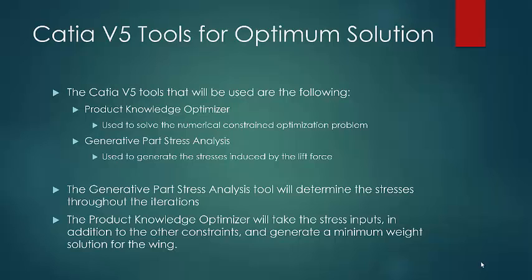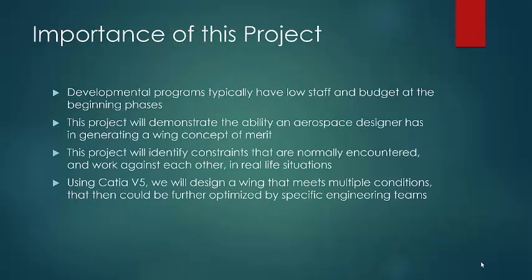The Product Knowledge Optimizer will take those inputs of the stresses as well as the geometric constraints, and that will be used to generate a minimum weight solution that will give us our final geometry in CATIA.